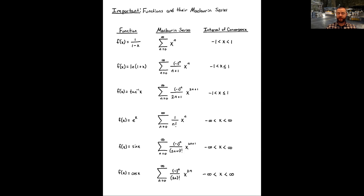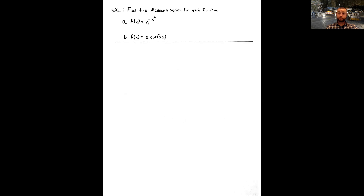Definitely copy these down and have them readily available for the examples ahead. Many of the calculations are very similar to how we first found power series representations for functions related to 1/(1−x) by making algebraic changes or substituting for x. We'll do the same thing now with the other five existing Maclaurin series — plugging algebraic expressions in for x to get similar power series representations.